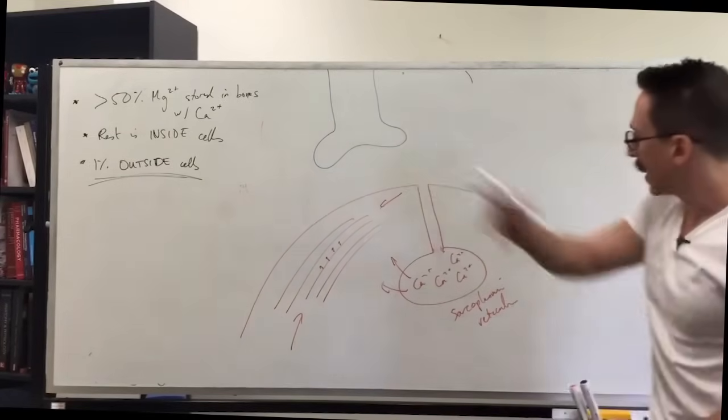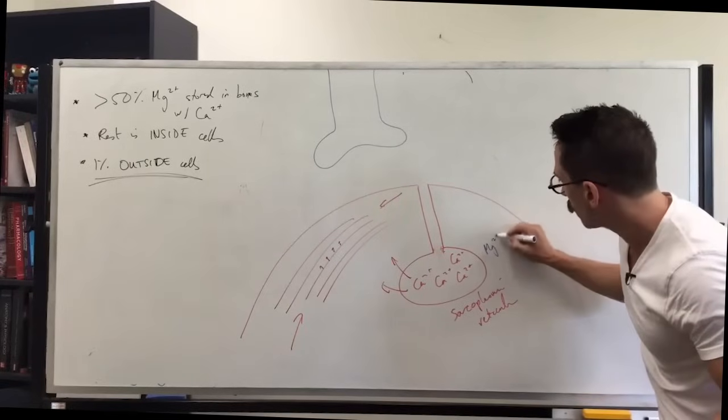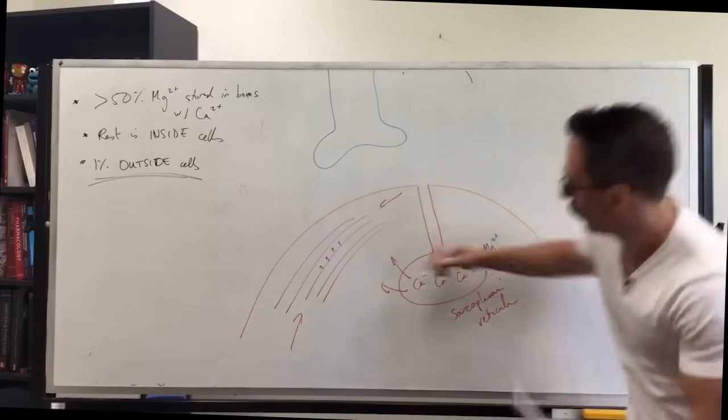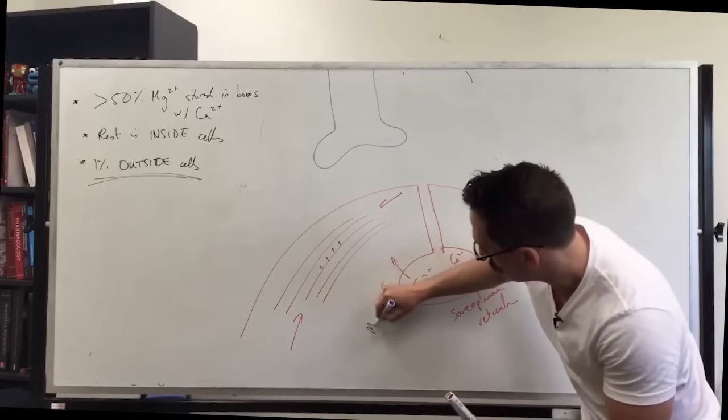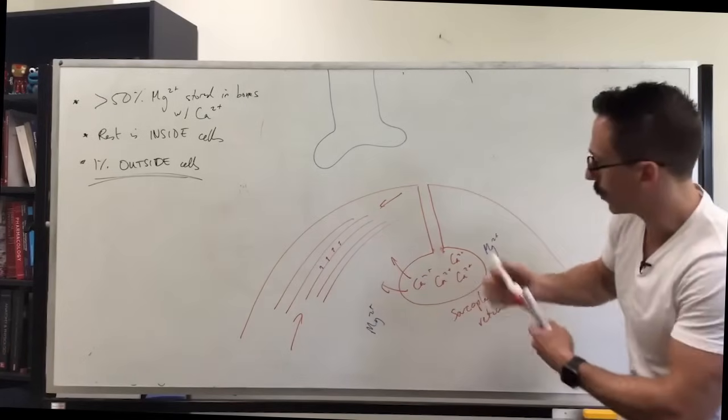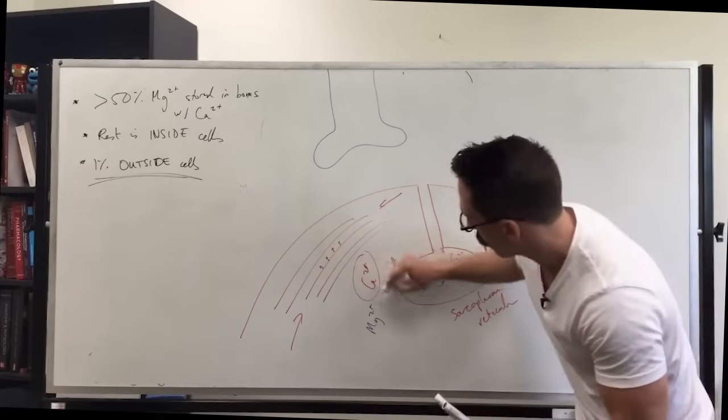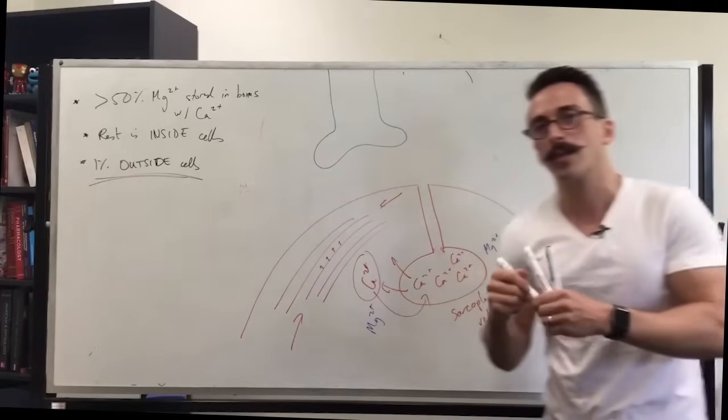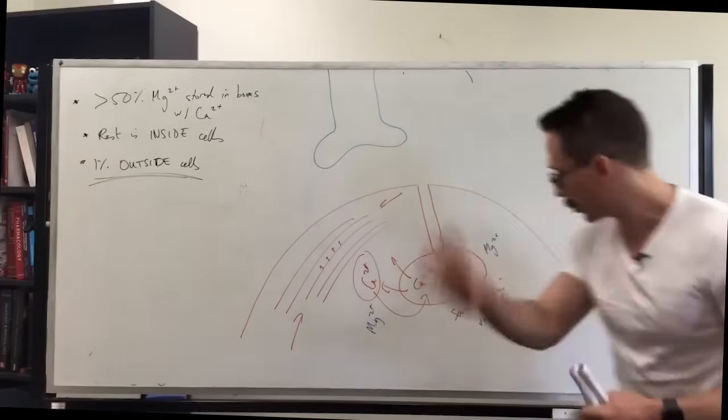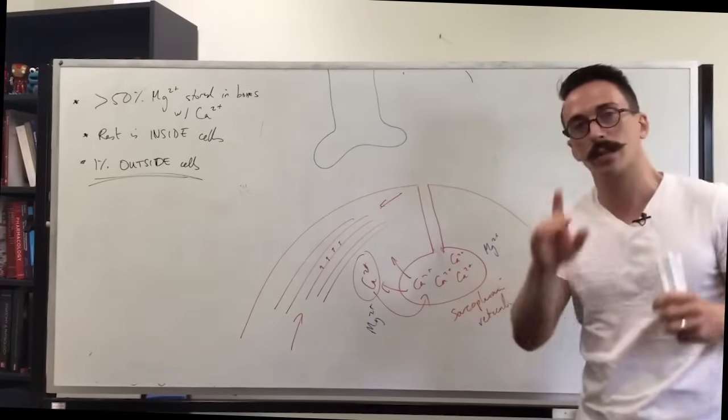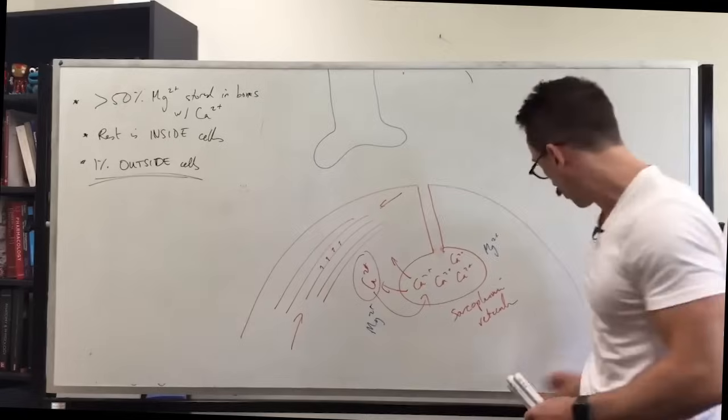Great thing is what magnesium does is it helps throw, so when you've got the calcium that's jumped out to allow for muscles to contract, magnesium takes the calcium that's been used and throws it back into the sarcoplasmic reticulum. So it helps replenish the stores of lost calcium in the sarcoplasmic reticulum so we can have another muscular contraction. So that's really important.